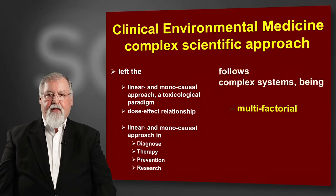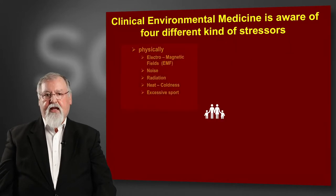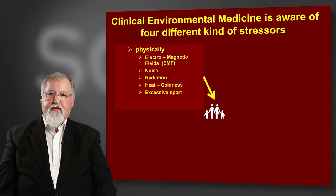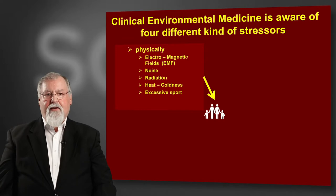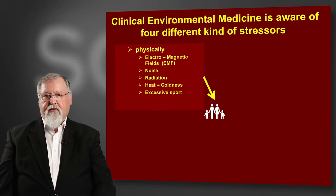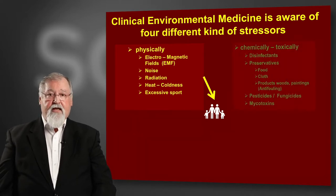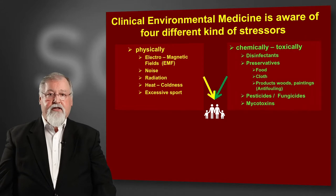What does it mean? We have a lot of stressors — four kinds of stressors. We follow up the physical kind: electromagnetic fields, noise, radiation, heat, coldness, and excessive sport.